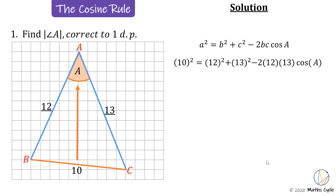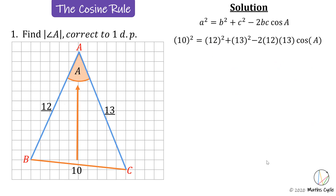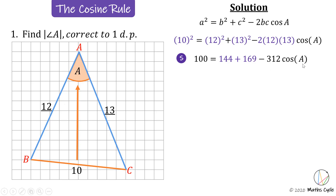Our first job is to simplify. 10 squared is 100, 12 squared is 144, 13 squared is 169, and minus 2 multiplied by 12 multiplied by 13 gives minus 312 times cosine A. Be careful of that sign. Then we add 144 and 169 together, leaving our equation as tidy as we can make it.